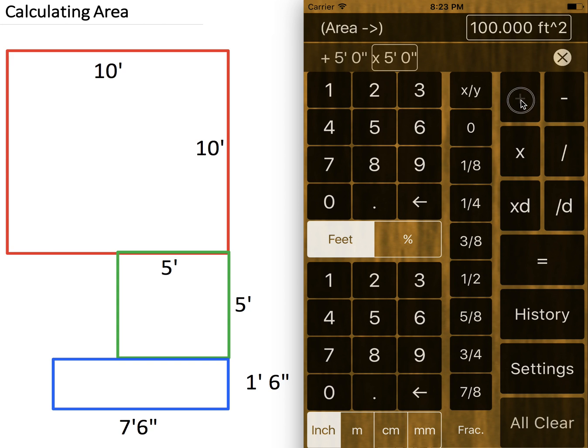And we'll add the blue box now, which is going to be one foot, six inches. Select the second input. And the next will be seven feet, six inches equals.